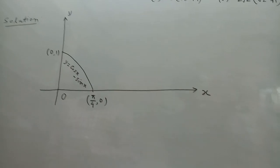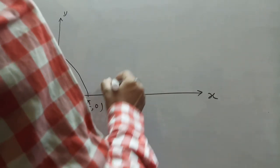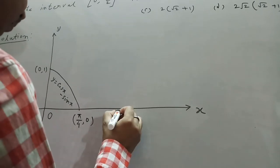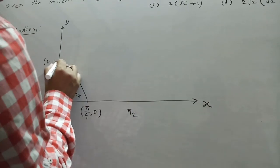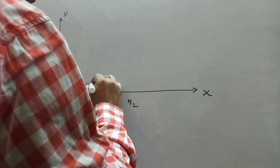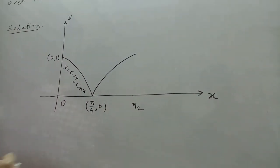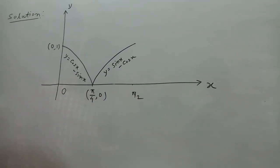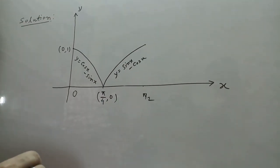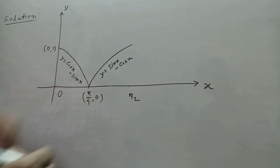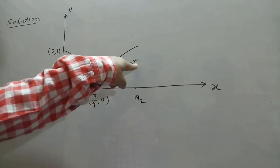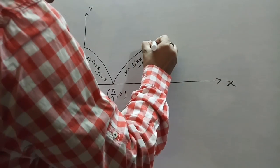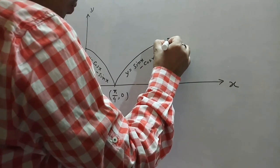The other curve, y = sin x - cos x: the value of sin x - cos x at x = π/4 is 0, so this curve also passes through (π/4, 0). And at x = π/2, the value of sin x - cos x is 1, so this curve also passes through (π/2, 1).